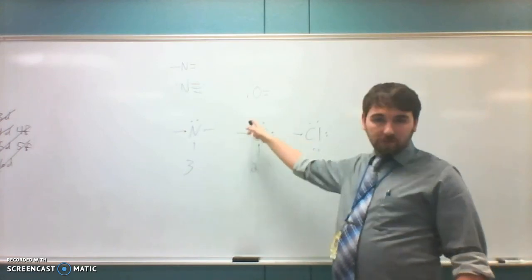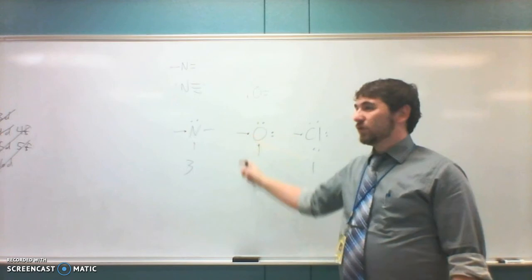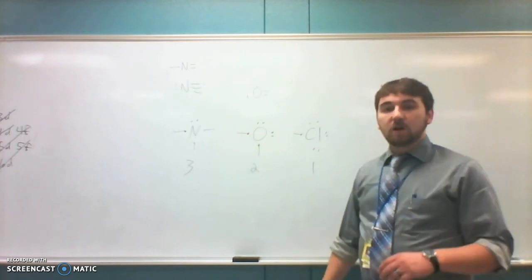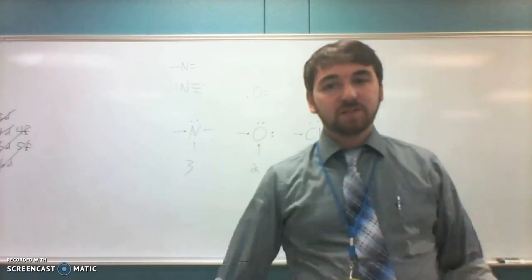So, just know, one, two, three, four, double up, five, six, two unpaired electrons, each one will form a bond. That's how you figure out how many bonds these things form.